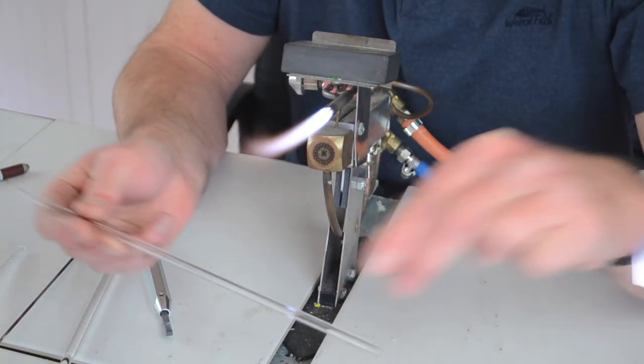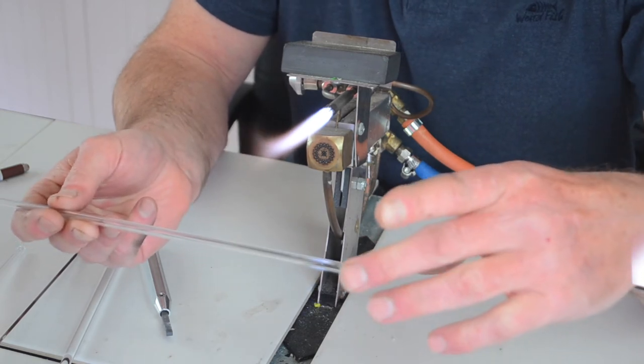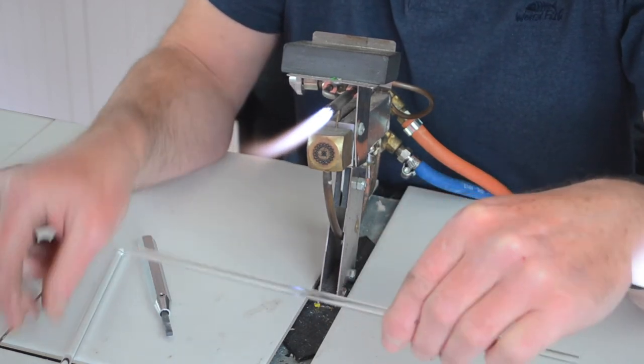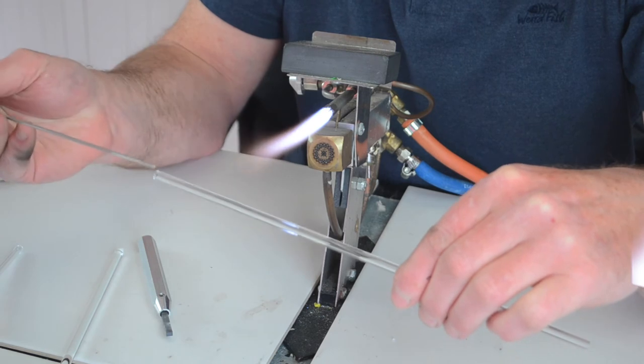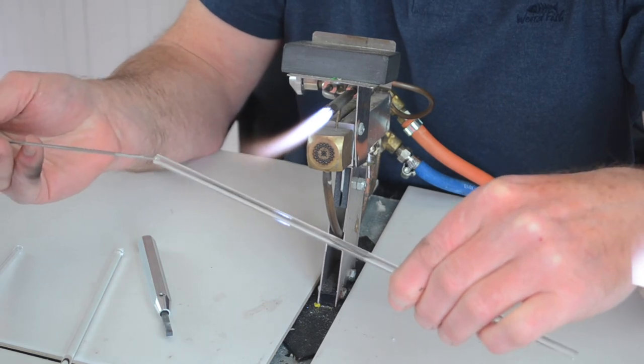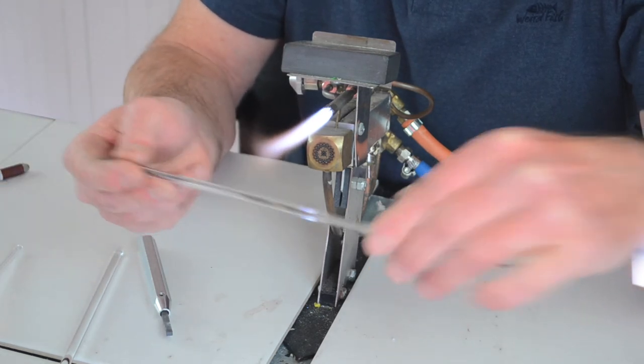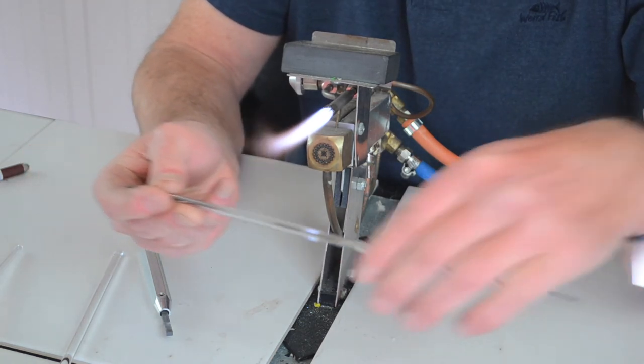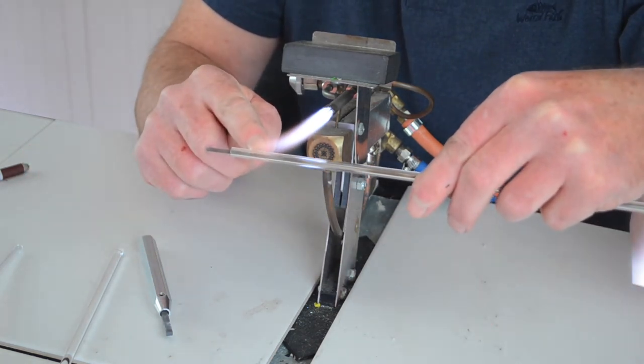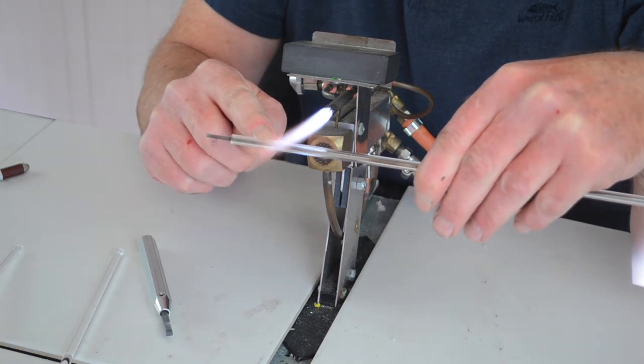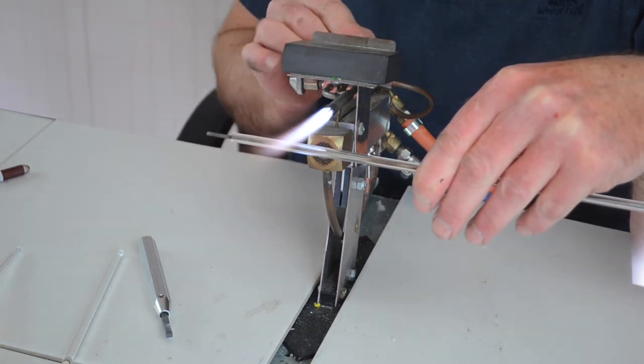So to make the wicks, we've got some 6mm by 1.5mm wall, but again, borosilicate tube. And I'm just going to put this 2mm mandrel down the center, so it's a loose fit down the center, and it's longer than the tube, doesn't matter if it's longer or shorter. And then I'm going to go about an inch and a half up the tube here.